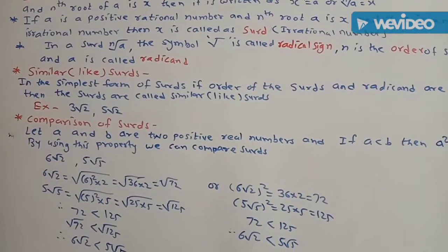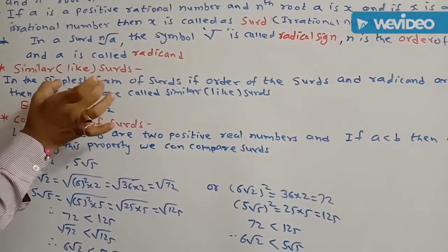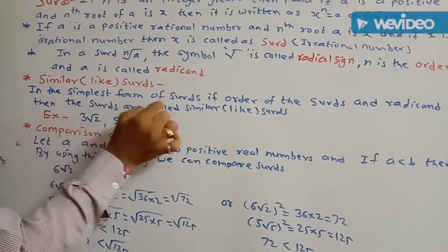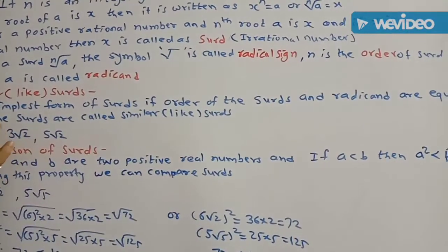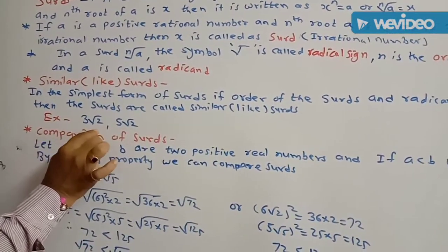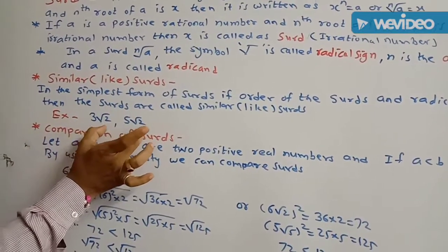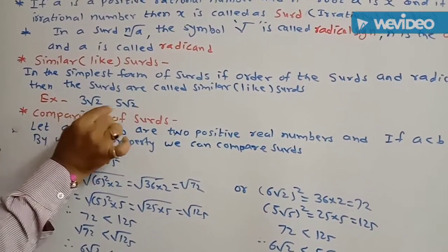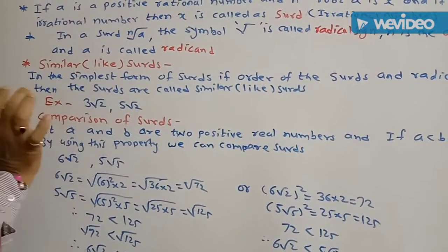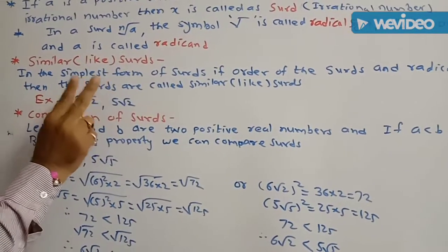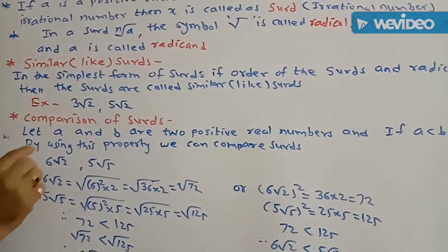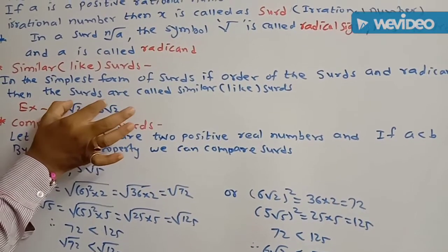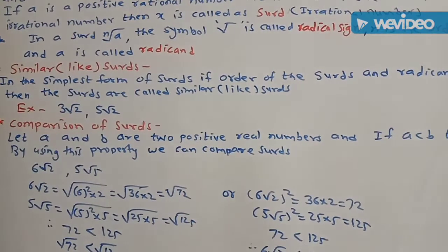Next topic: similar SIRDs or like SIRDs. In the simplest form of the SIRDs, if the order of the SIRD and the radical are equal, then the SIRDs are called similar SIRDs. For example, 3 root of 2 and 5 root of 2 — in both, the radical and the order of the radical are the same. Therefore, 3 root of 2 and 5 root of 2 are called like SIRDs.